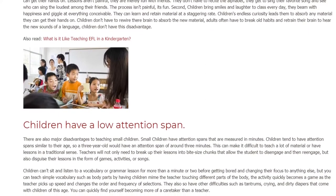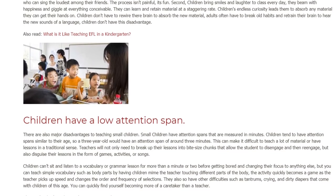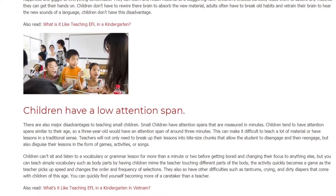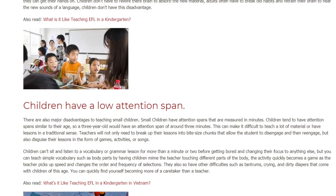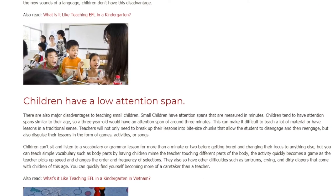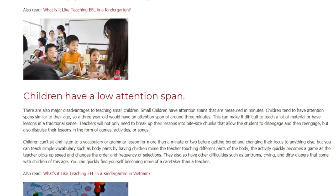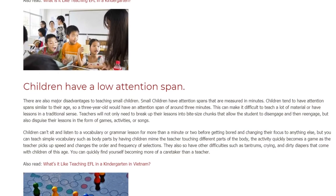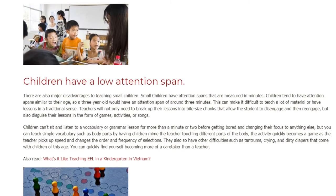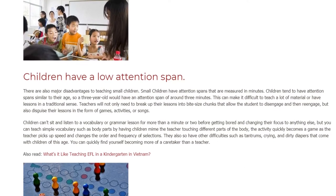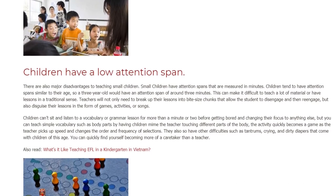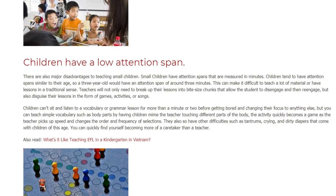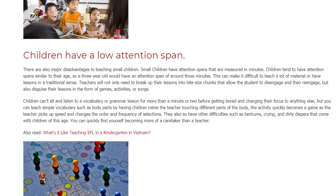There are also major disadvantages to teaching small children. Small children have attention spans that are measured in minutes — children tend to have attention spans similar to their age, so a 3-year-old would have an attention span of around 3 minutes. This can make it difficult to teach a lot of material or have lessons in a traditional sense. Teachers will not only need to break up their lessons into bite-sized chunks that allow the student to disengage and then re-engage,